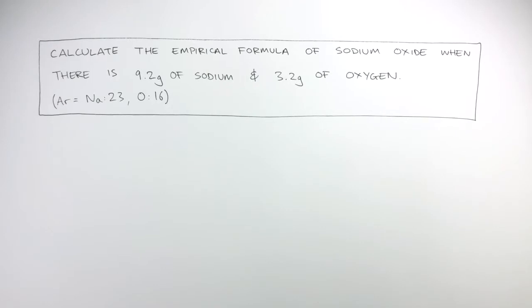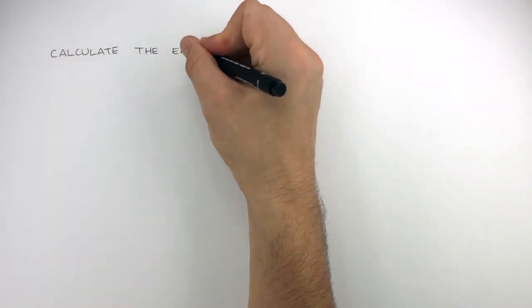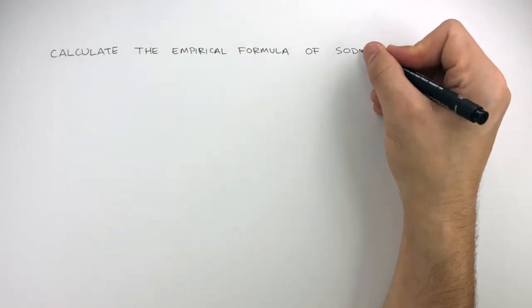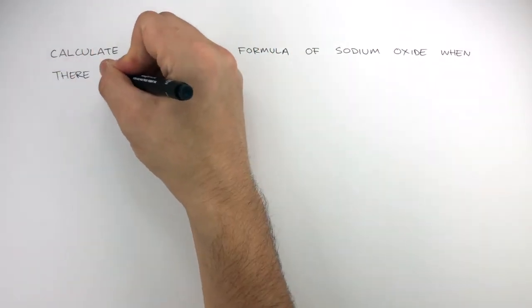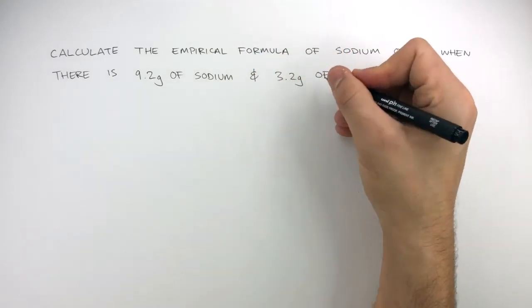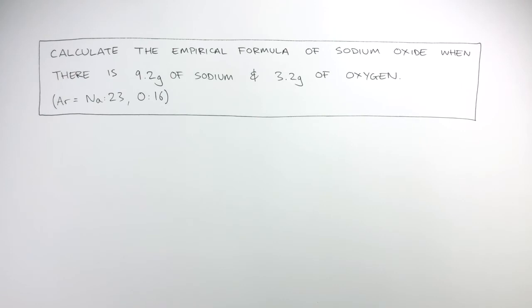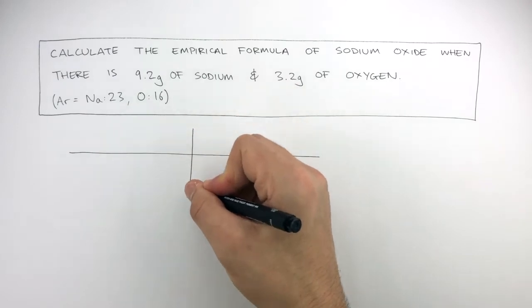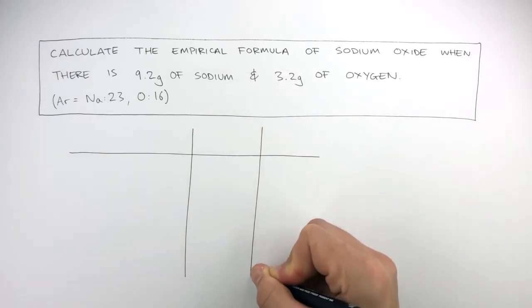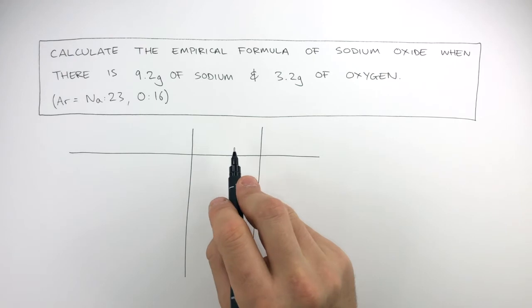In this typical exam-style question, you are being asked to calculate the empirical formula of sodium oxide when there is 9.2 grams of sodium and 3.2 grams of oxygen. You are always given the relative atomic masses of the elements being asked about. To successfully complete this question in the exam, I advise you to draw a table in the space provided, with three columns.